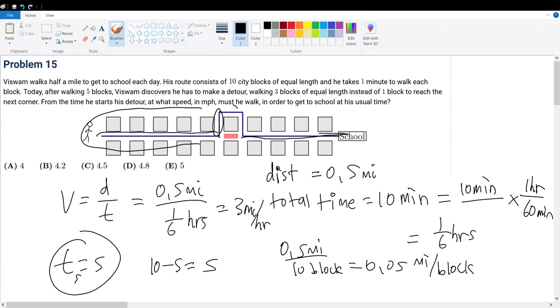What is the new distance that he must travel? Count it up, it's one, two, three, four, five, six, seven. He must travel seven blocks. So seven blocks multiplied by 0.05 miles per block, the units of blocks get canceled and we're only left with 0.35 miles. His new distance is 0.35 miles.